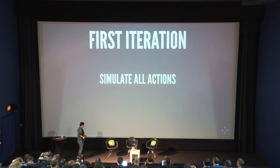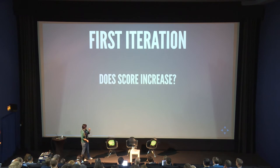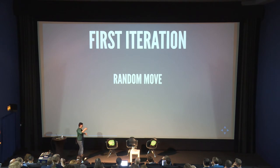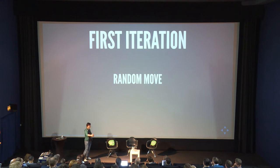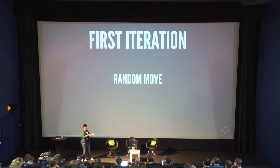The way I thought would work well was to take the board state, simulate all four possible actions, and then check whether the score increased. When the score increases, you know you merged something — you did something probably good. Then you reset the board to the state before the simulation and make a random move to progress the game. So you get: a state, simulate left, check score, save it, reset, simulate next action, and so on.